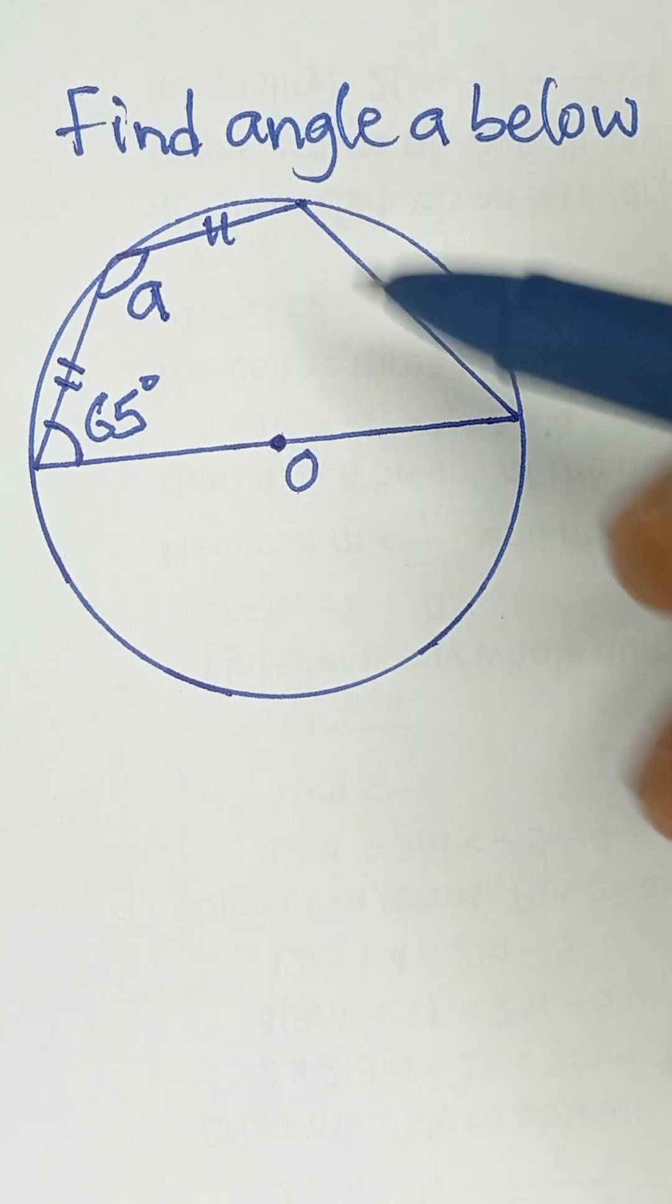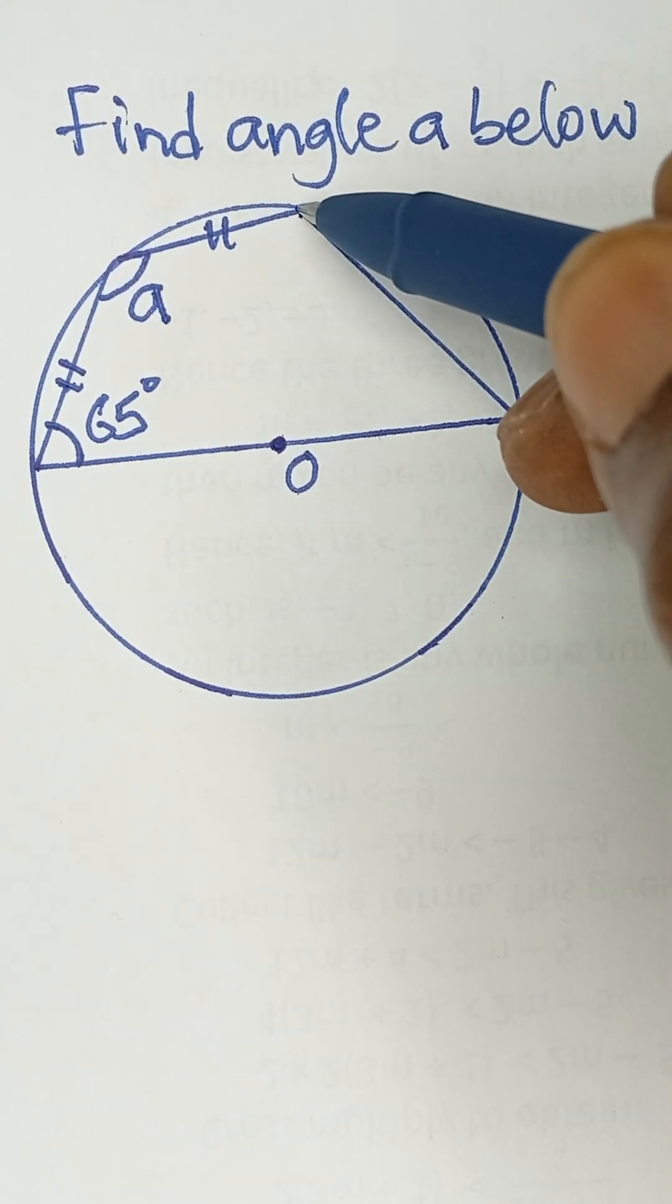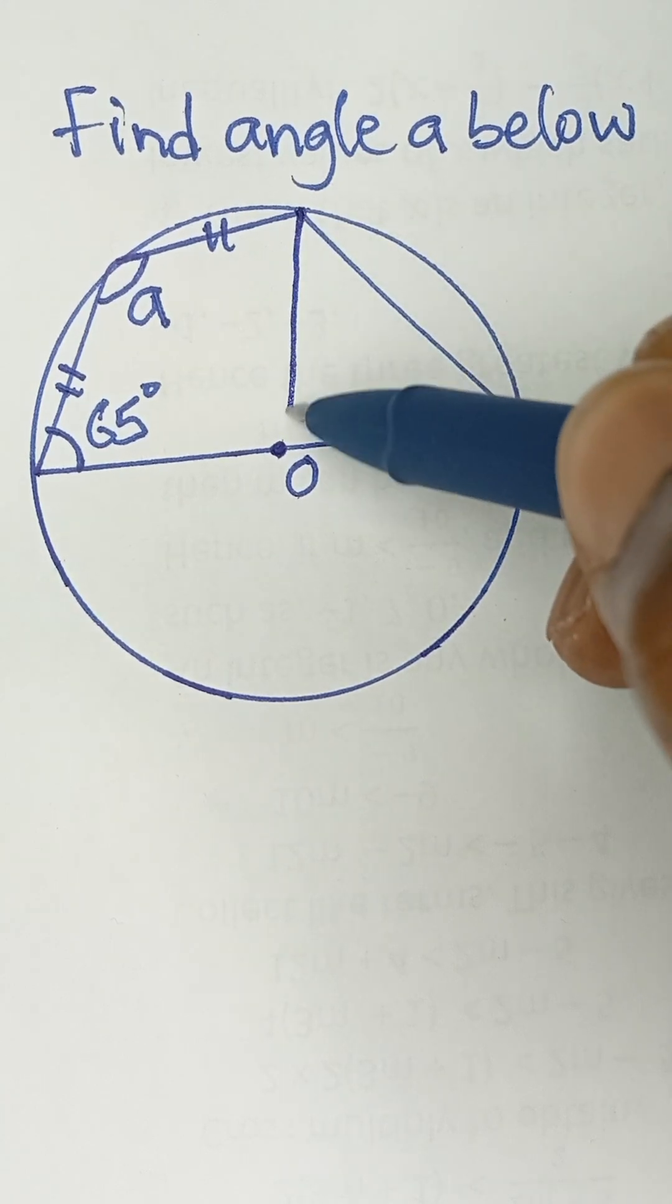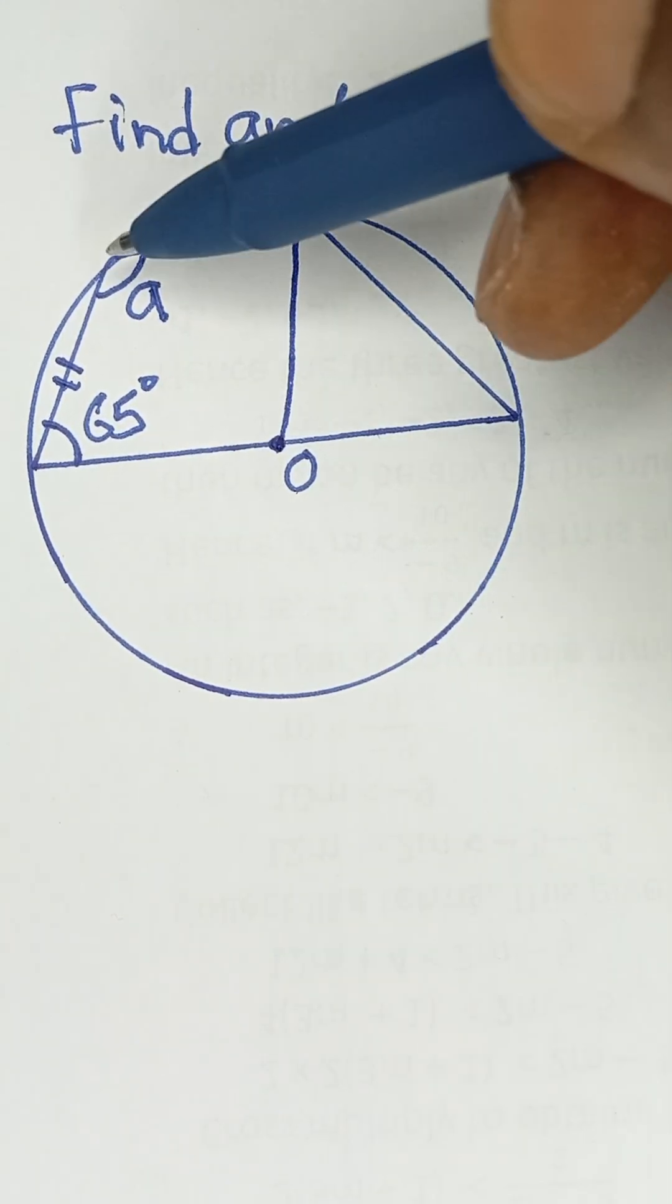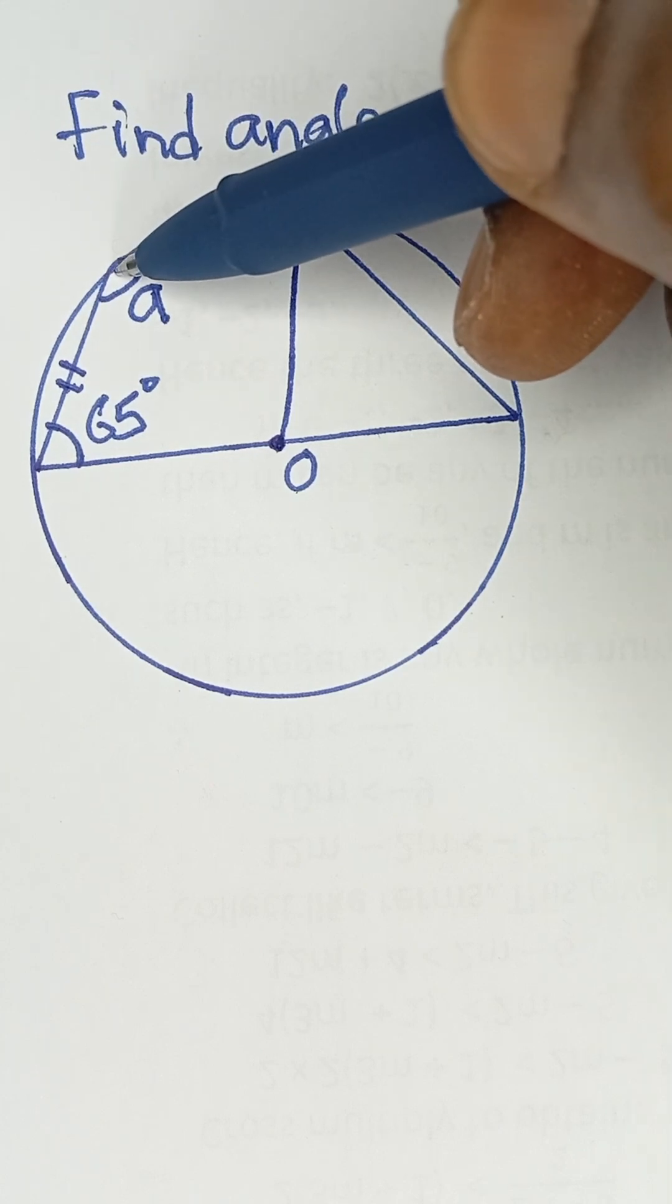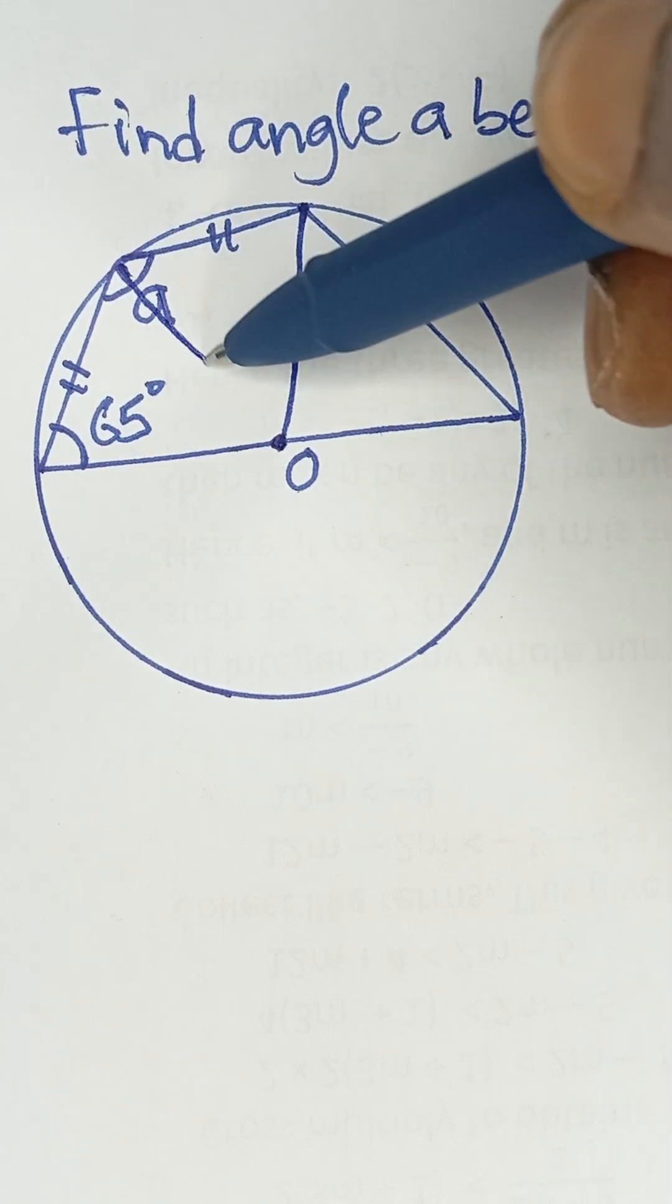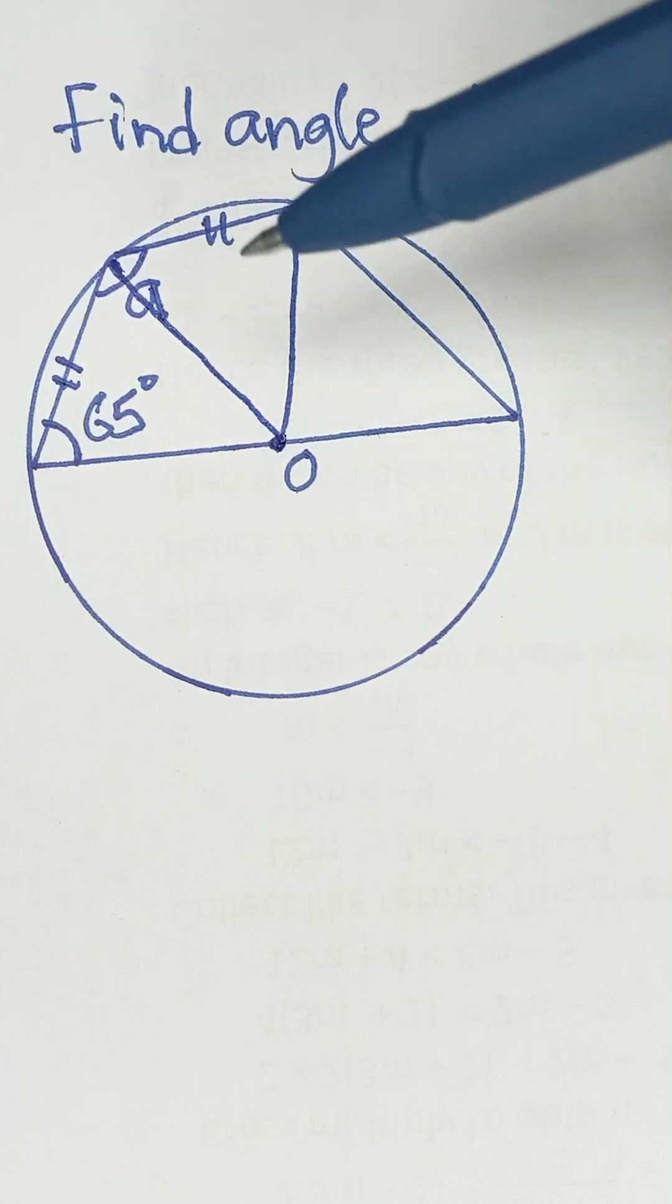what we can simply do is to draw a line from this point to the center of this circle. And then we can also draw a line to divide this angle A here to the center of the circle.